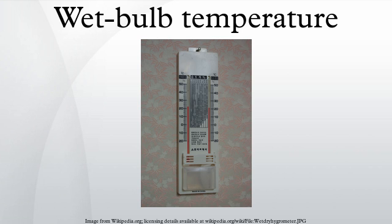For dry air — air that is less than saturated — the wet bulb temperature is lower than the dry bulb temperature due to evaporative cooling. The greater the difference between the wet and dry bulb temperatures, the drier the air and the lower the relative humidity. The dew point temperature is the temperature at which the ambient air must cool to reach 100% relative humidity, where condensate and rain form. Conversely, the wet bulb temperature rises to converge on the dry bulb temperature.